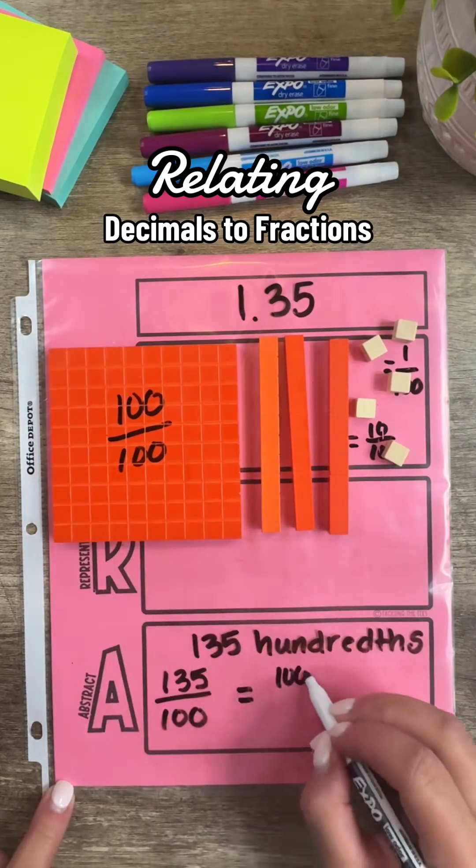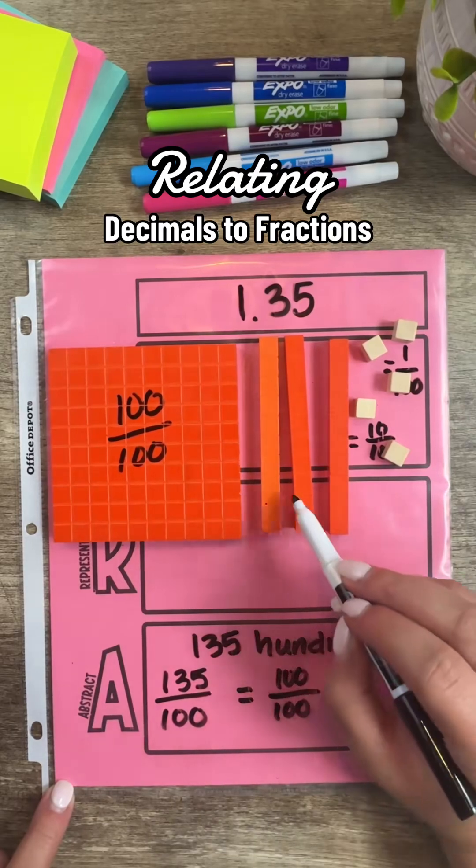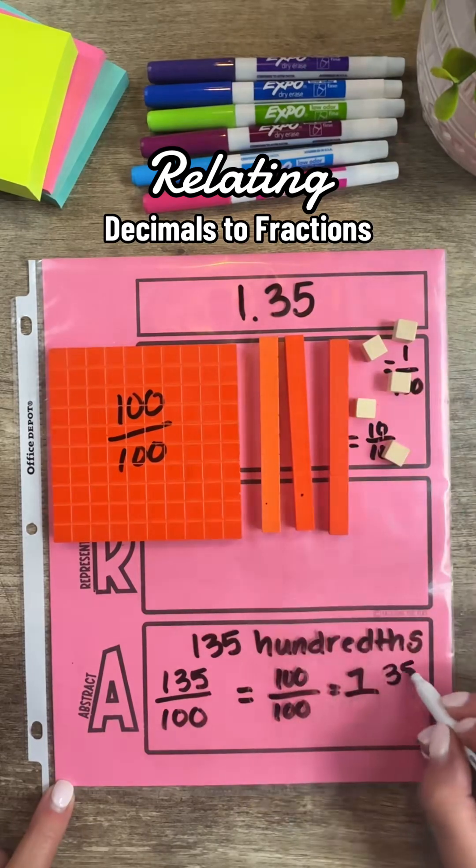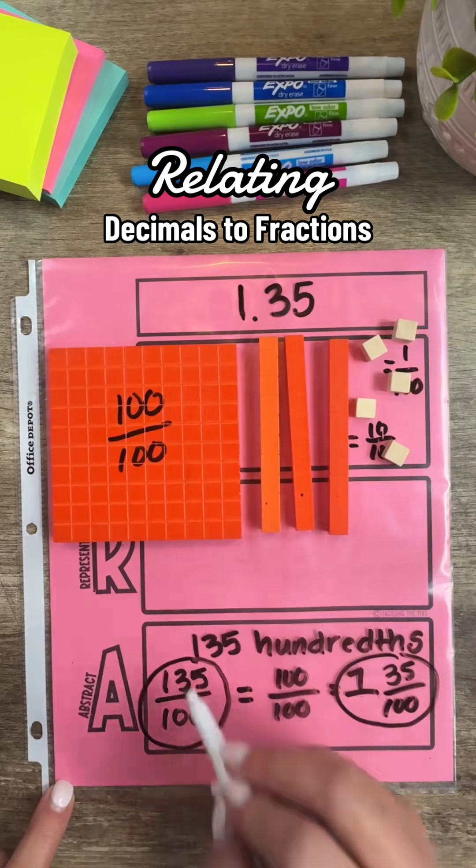To write this as a mixed number, I know that 100 one hundredths equals 1 whole, and what I have left is 35 hundredths. So we can relate this decimal to 135 hundredths or 1 and 35 hundredths.